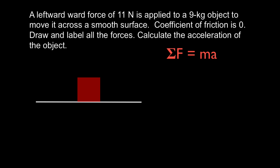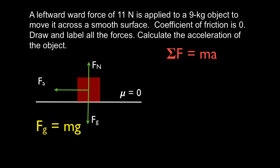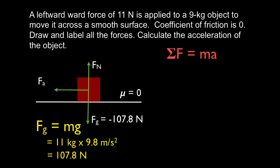We're going to use Newton's second law again. We want to draw all the forces. There is the gravitational force, there is the normal force, and the applied force is going to be to the left — we draw that and call it Fa. The coefficient of friction is again zero. The gravitational force is mass times g: 9 kilograms times 9.8 meters per second squared gives us 107.8 Newtons, and we put minus because it's in the downward direction. The object is not moving up or down, so the normal force is plus 107.8 Newtons. The applied force is 11 Newtons pointing to the left, so we put minus 11 Newtons.